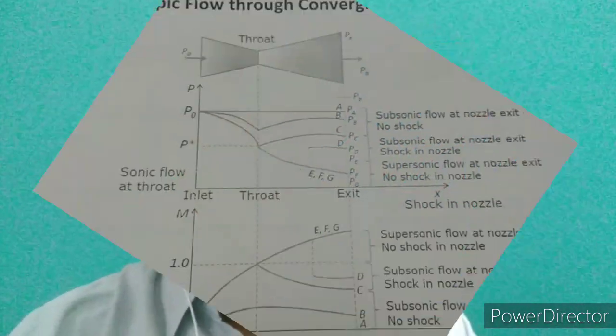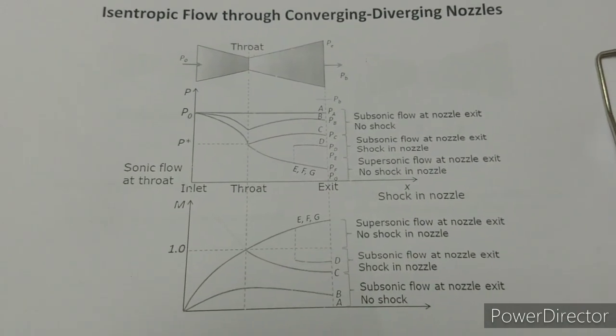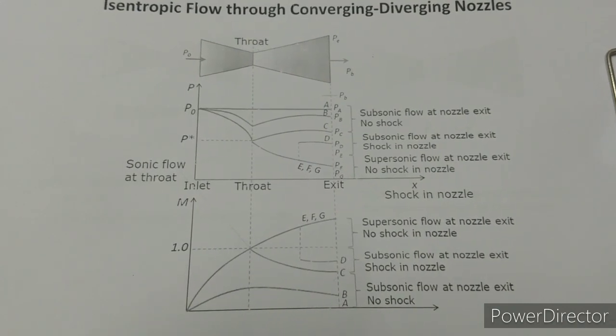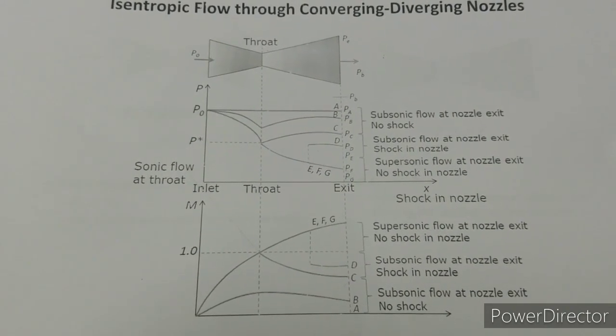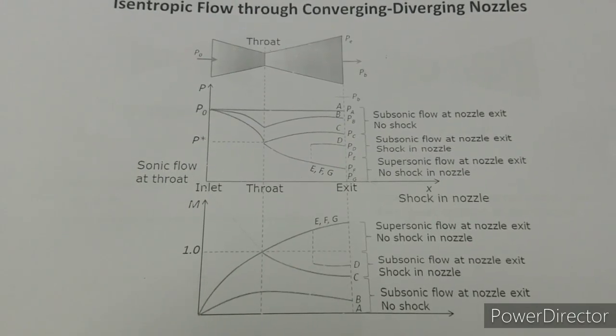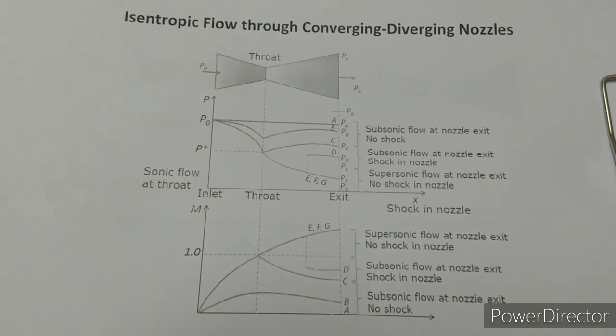Hello students. We have seen flow through convergent nozzle in the last class. Today we will look into flow through convergent-divergent nozzle, and this results in different types of nozzle like over-expanded nozzle, under-expanded nozzle, or fully expanded nozzle. These details we will look into in today's lecture. Let us look into isentropic flow through convergent-divergent nozzle, similar to our previous lecture where flow through convergent nozzle is explained.